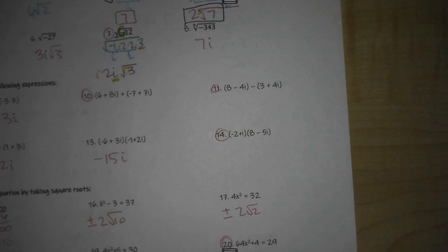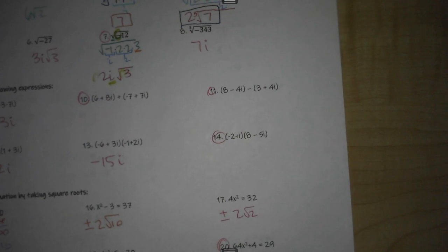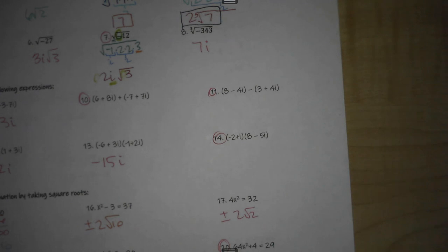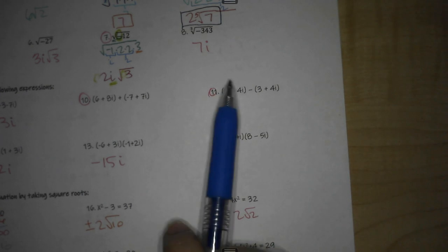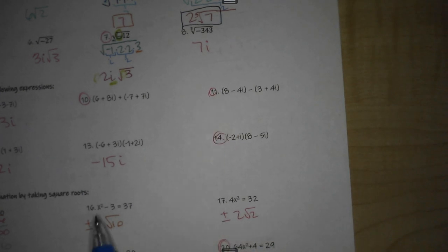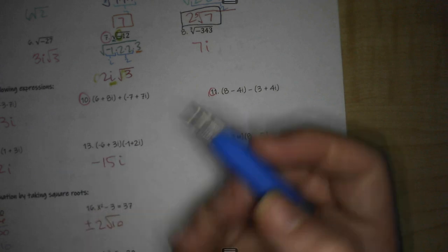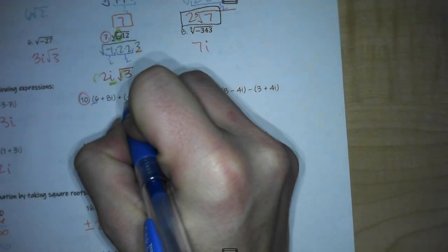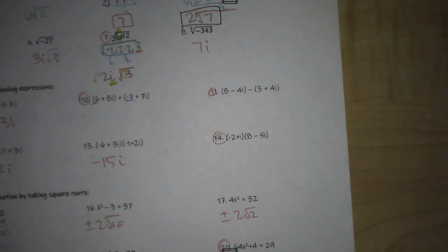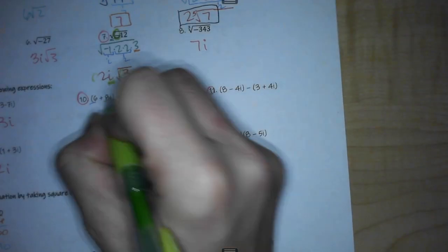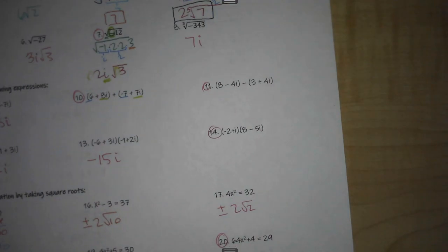We have a cheat code in our calculator. If you don't have a calculator to use, all you're doing on adding and subtracting is combining like terms. So like terms is this 6 and negative 7, and then this 8i added to the 7i.